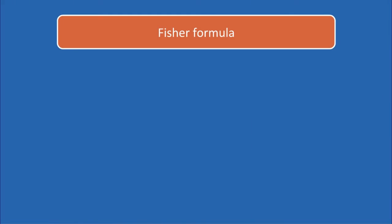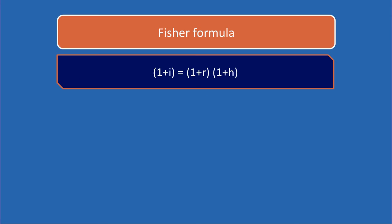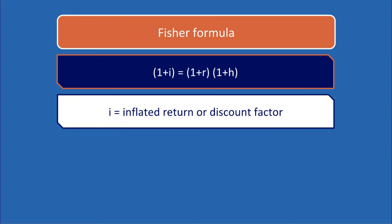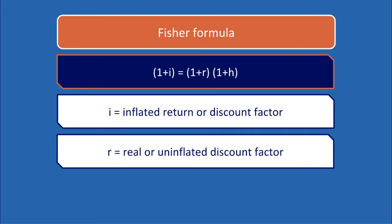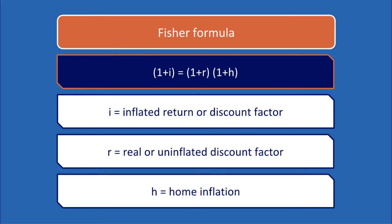The Fisher formula. The discount factor must be consistent with the cash flows from an inflationary perspective. If you need to convert the discount factor from uninflated to inflated or vice versa, you can do so using the Fisher formula: 1 plus I equals 1 plus R multiplied by 1 plus H. I is the inflated return or discount factor, R is the real or uninflated return or discount factor, and H is the home inflation rate.